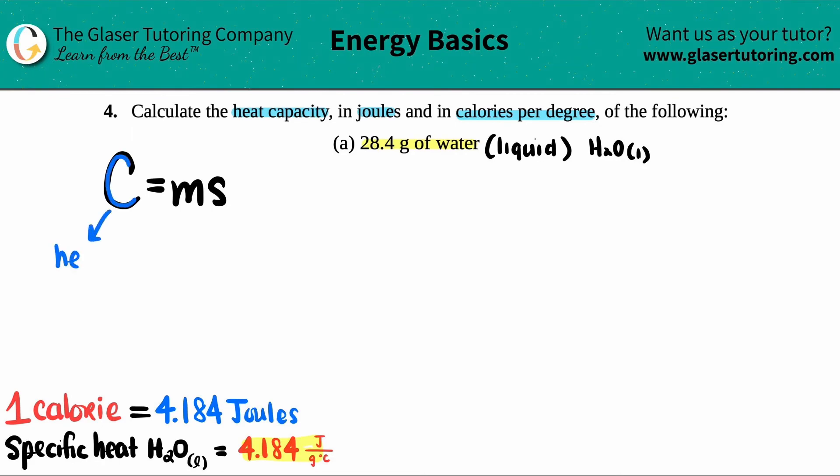Capital C is the heat capacity. If we're using this formula, the heat capacity is always going to be in joules per degree Celsius. That's the first answer we're going to get.